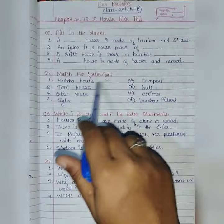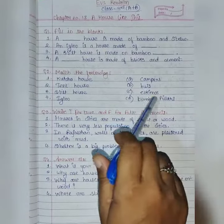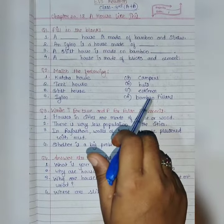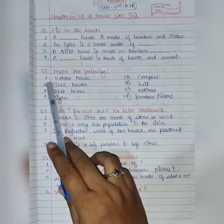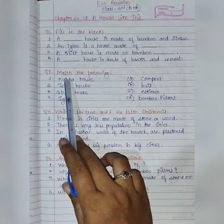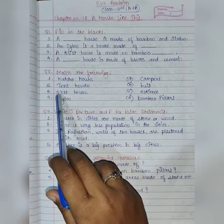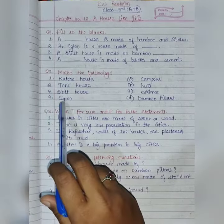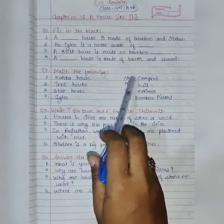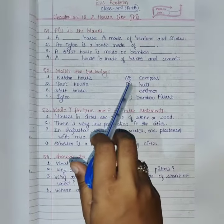Match the following. You have to give in the two columns and you have to match the proper column one to column two. First in column number one: first is kaccha house, second is tent house, third is stilt house, and fourth is igloo. Then column two: A is campers, B is hut, C is eskimos, and D is bamboo pillars.